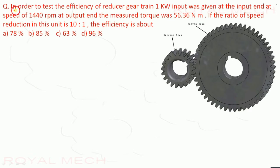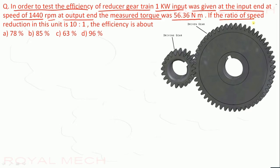In order to test the efficiency of reducer gear train, 1 kW input was given at the input end at a speed of 1440 rpm. At output end, measured torque was 56.36 Nm. If the ratio of speed reduction in this unit is 10 is to 1, the efficiency is about. We have given four options.